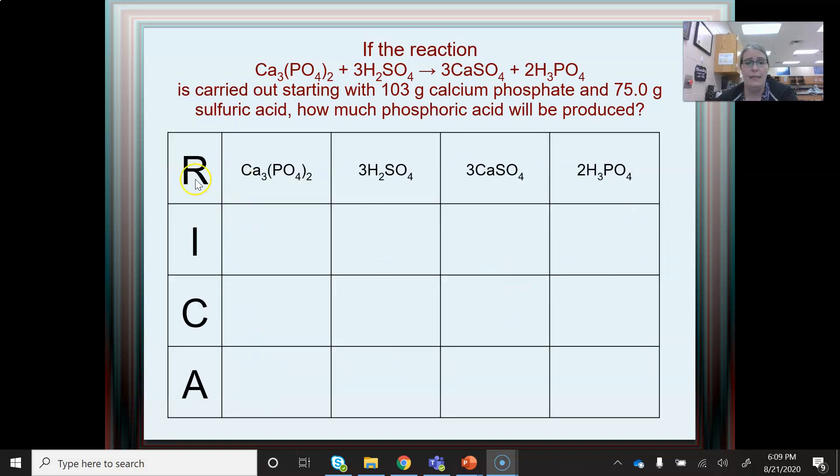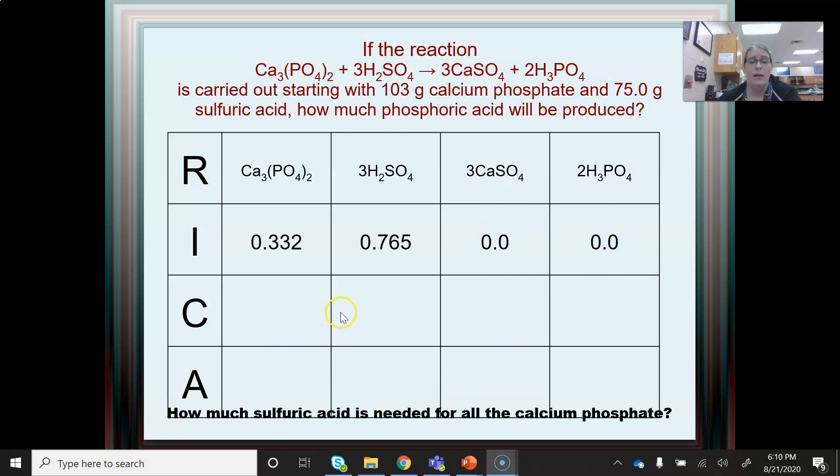So here's my RECA table. Reaction, write that out. Initial, where do I start? Change, what gets used up and what gets made. And after, where do I end? So initially, I don't have any products. So I can always put a zero here in a stoichiometry problem. So I'll put my moles in for my initial, the moles I just calculated, 0.332 moles, 0.765 moles.